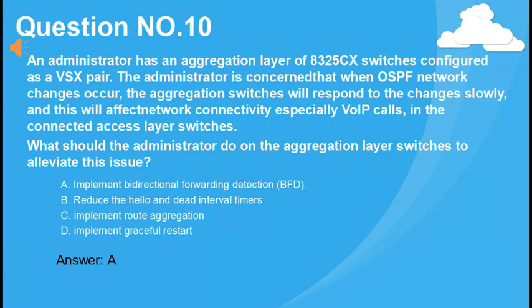An administrator has an aggregation layer of 8325 CX switches configured as a VSX pair. The administrator is concerned that when OSPF network changes occur, the aggregation switches will respond to the changes slowly, and this will affect network connectivity, especially VoIP calls, in the connected access layer switches. What should the administrator do on the aggregation layer switches to alleviate this issue? A. Implement Bidirectional Forwarding Detection (BFD). B. Reduce the hello and dead interval timers. C. Implement root aggregation. D. Implement graceful restart. Answer: A.